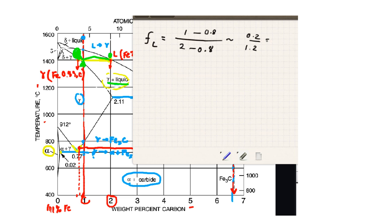So it's 0.2 divided by 1.2, and that is equal to 1 sixth. That fraction is 1 sixth.